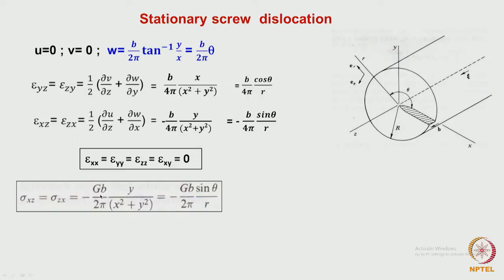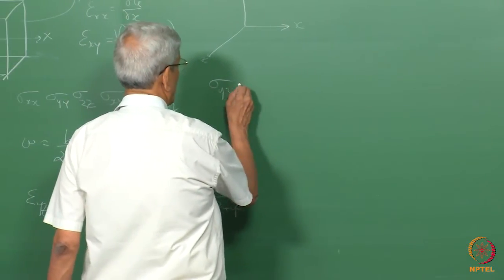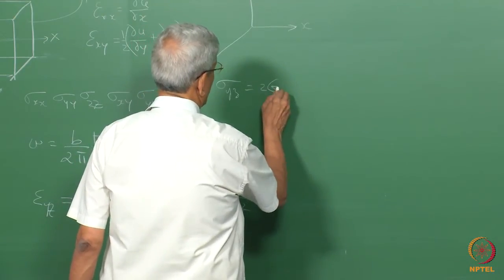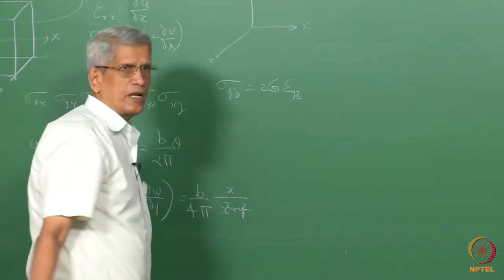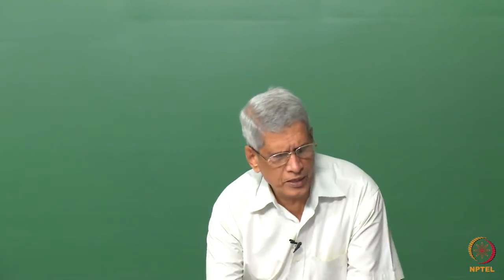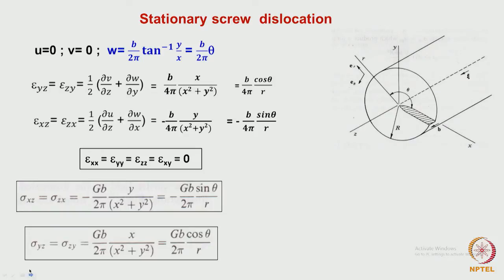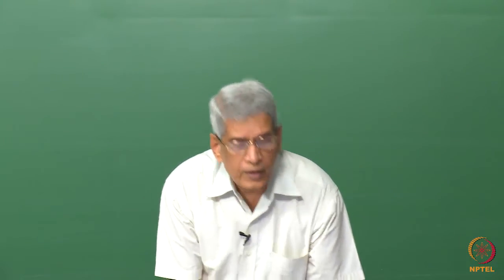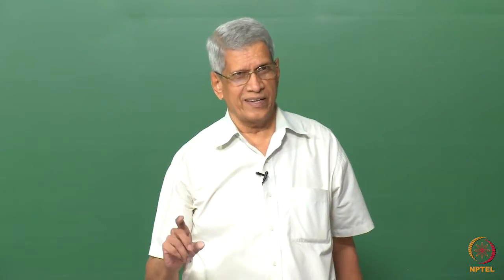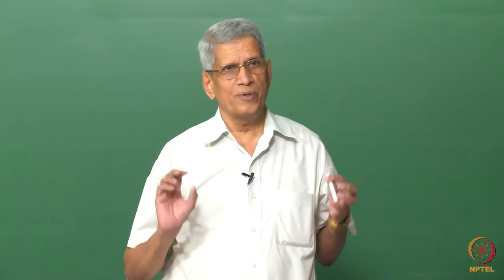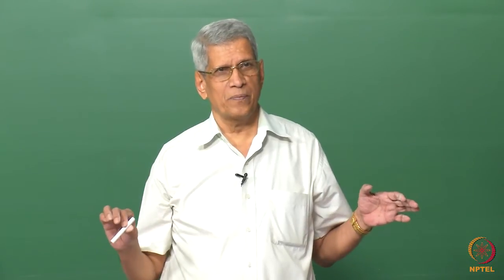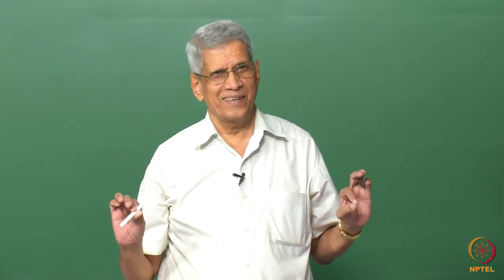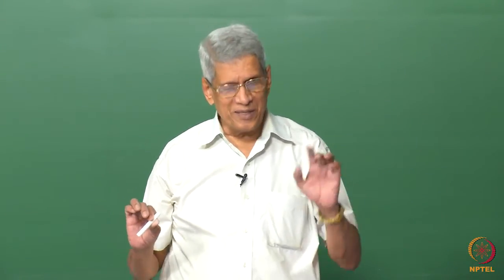Substituting into the generalized Hooke's law: sigma_yz = 2G × epsilon_yz, we get a specific expression. Similarly for sigma_xz. In the screw dislocation, the key difference from edge is that there are only shear stresses and no tensile stresses, nor hydrostatic stress. All other stress components such as sigma_xx, sigma_yy, sigma_yz are zero.